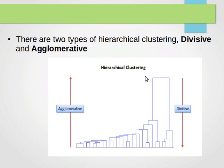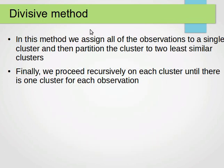In the divisive method, we assign all the observations to a single cluster and then partition it into the two least similar clusters — so one big cluster divided into two. That means the dissimilarity between the two resulting clusters needs to be high, while dissimilarity within each cluster needs to be low. We then proceed recursively on each cluster.